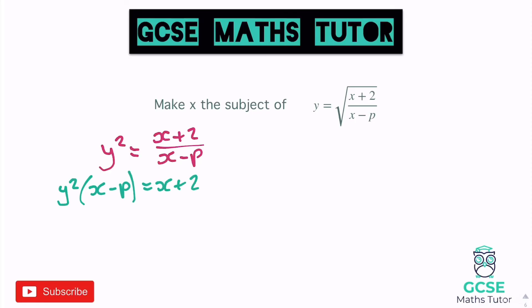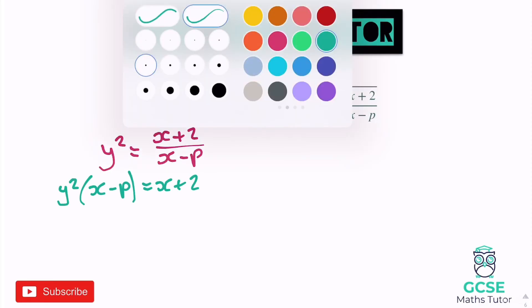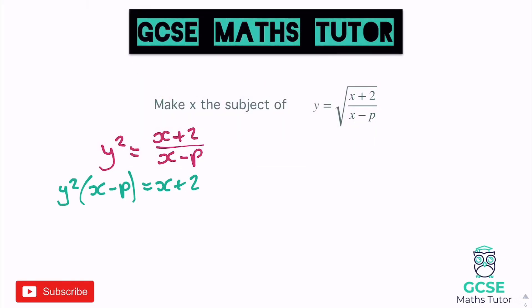We're going to need to get rid of that bracket now, so let's expand it. We get xy squared minus py squared equals x plus 2.